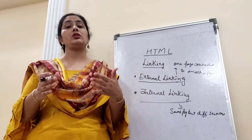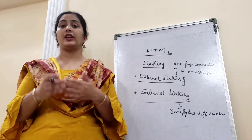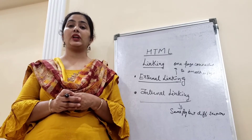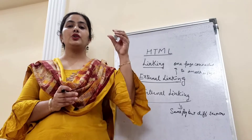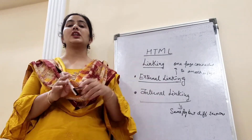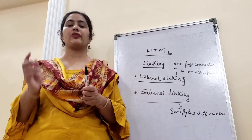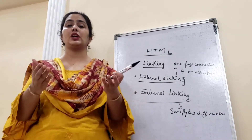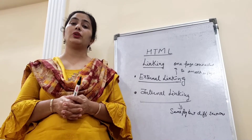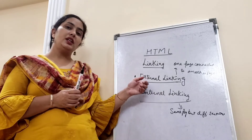You can also connect your one webpage to another website. For example, google.com. When you are using google.com, whatever you want to search, you write your search criteria in the box and Google gives you a long list of websites. From that long list, you can choose the website which is appropriate according to your search. This is called external linking.